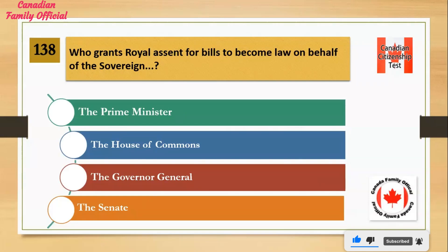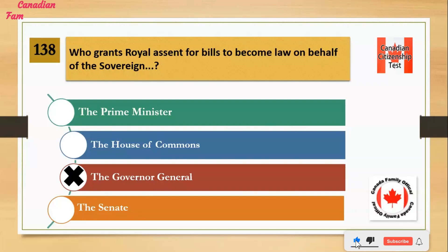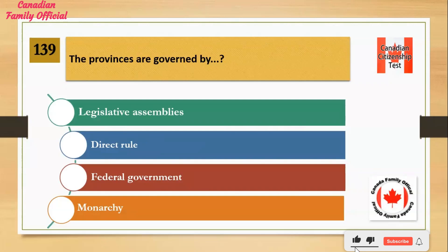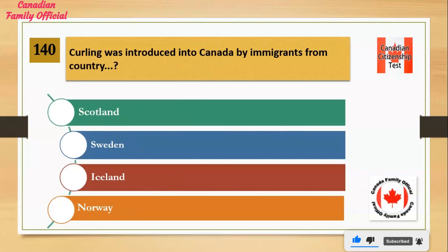Number 1: The Prime Minister. Number 2: The House of Commons. Number 3: The Governor General. Number 4: The Senate. And the answer is the Governor General. The provinces are governed by: Number 1: Legislative Assemblies. Number 2: Direct Rule. Number 3: Federal Government. Number 4: Monarchy. And the answer is Legislative Assemblies.